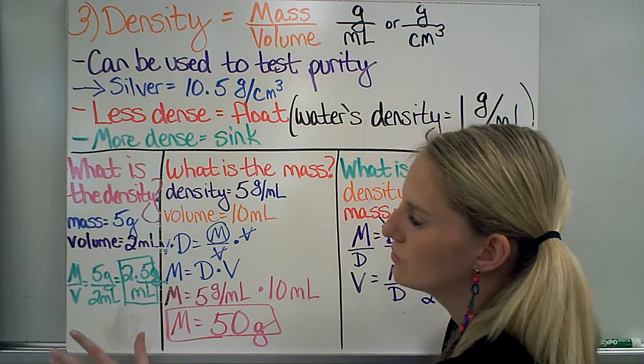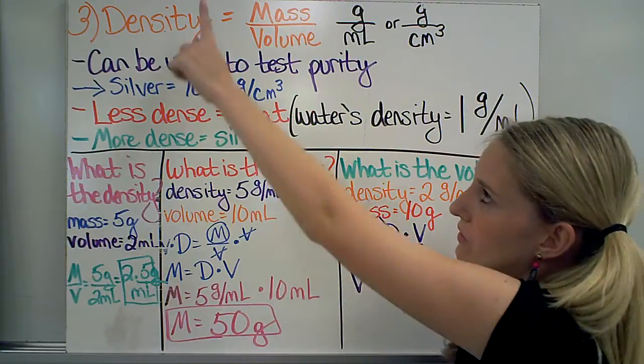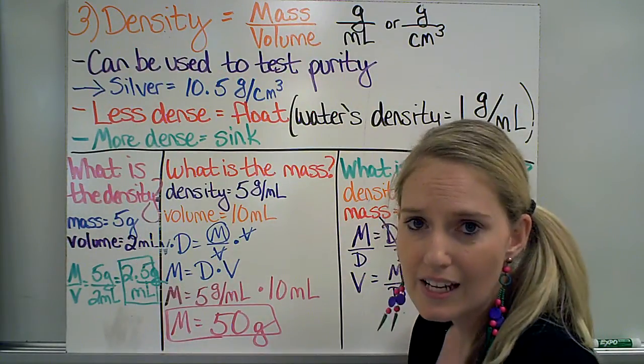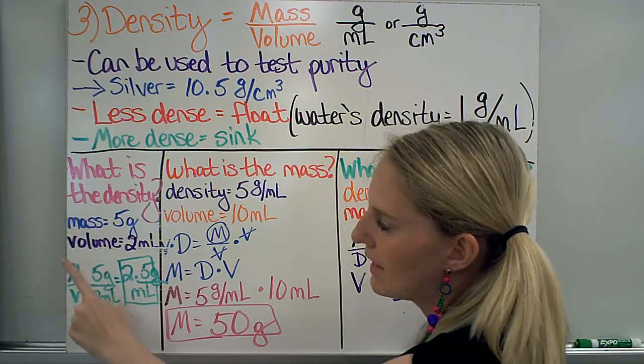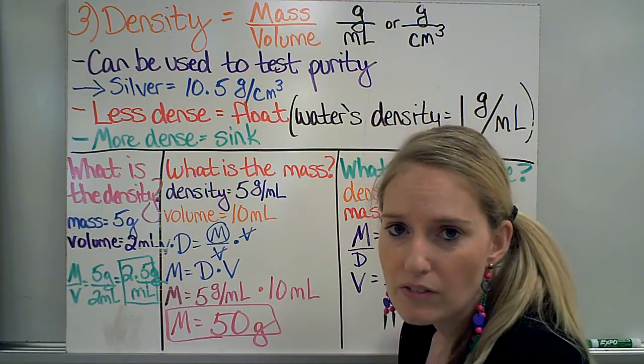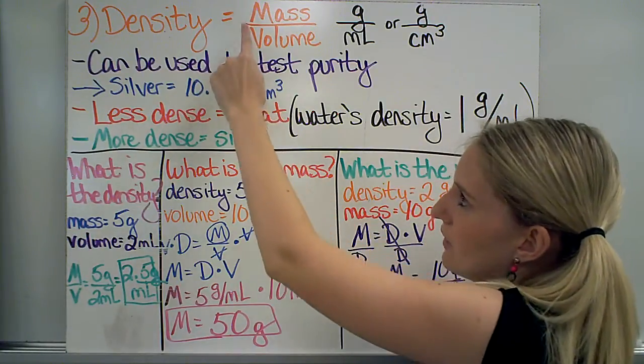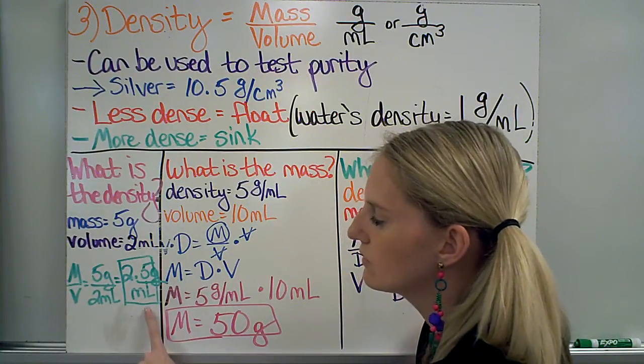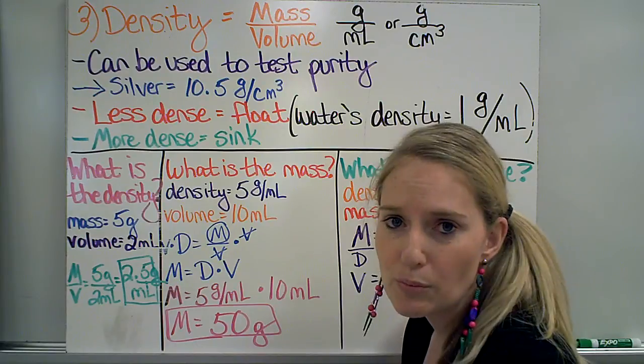To do some practice calculations with this equation, if I'm asked to calculate the density, then I must be given that object's mass and volume. All I have to do is plug it in here: mass divided by volume. That one's pretty simple. Five divided by two gives me 2.5 grams per milliliter.